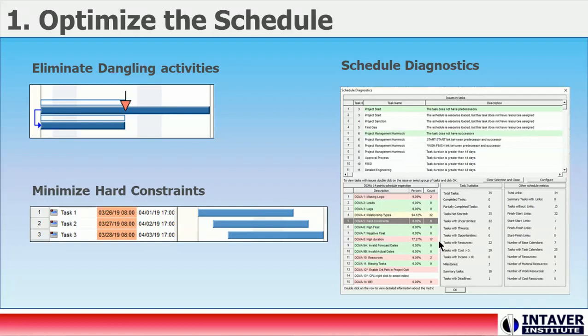Running a schedule diagnostic, such as a standard 14-point DCMA check, will allow you to quickly identify these issues and address them as appropriate.